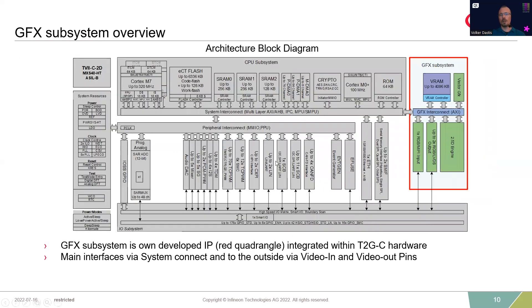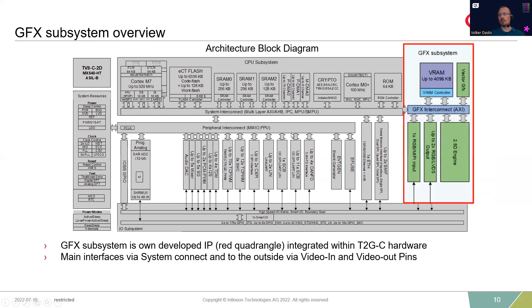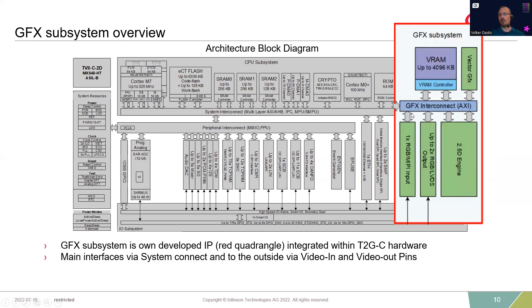This is the block diagram. In gray you have the normal MCU design — two CPUs, Cortex-M7s and a Cortex-M0, Crypto, RAM, and typical automotive peripherals like LIN, CAN, or Ethernet. Today we concentrate on the graphic subsystem with an on-chip interconnect, 2.5D engine, vector engine, video RAM, and video in and video out.